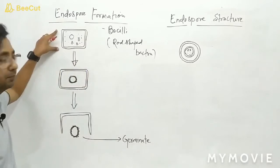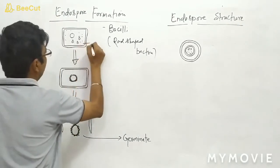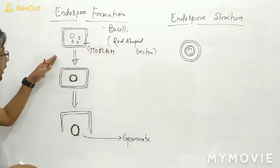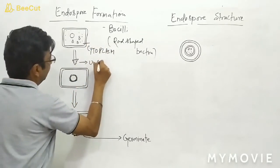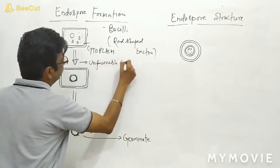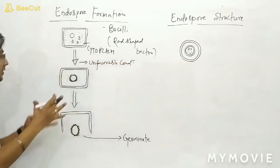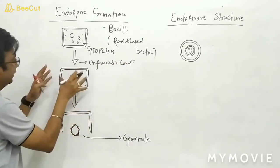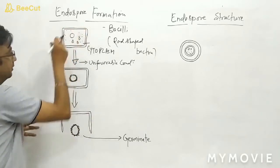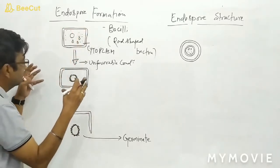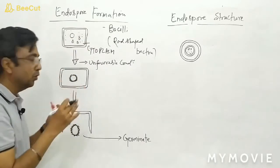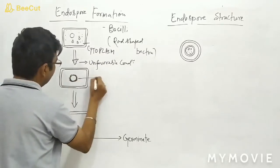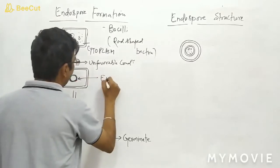This is a bacterial cell, and this is the cytoplasm. During unfavorable conditions, there is shrinkage of cytoplasm — the cytoplasm shrinks, and the components of the cytoplasm are combined into just one small structure. This structure is covered by a thick wall, and we can call this whole structure the endospore.